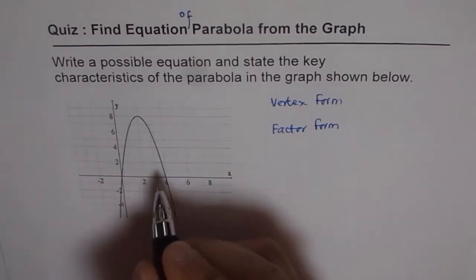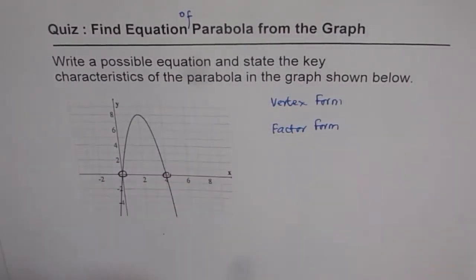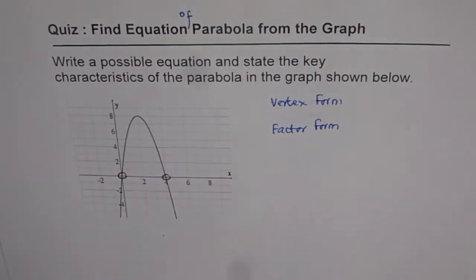In this case, we have very clearly defined intercepts, so we could go for that. We also have a very clearly defined vertex. Either way is good enough to write the equation. You can adopt any method and write the equation.